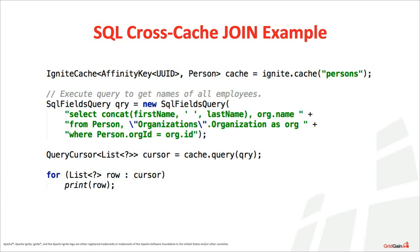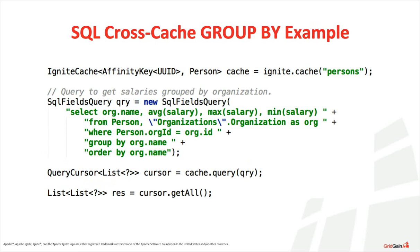Here's another SQL example. We demonstrate group by and order by clauses. Using distributed joins, we're querying for organization name and the average, minimum, and maximum salaries of all people working within that organization. We do a group by based on organization name and utilize average aggregate functions — one of the fairly simple yet powerful queries you can execute on top of Apache Ignite.